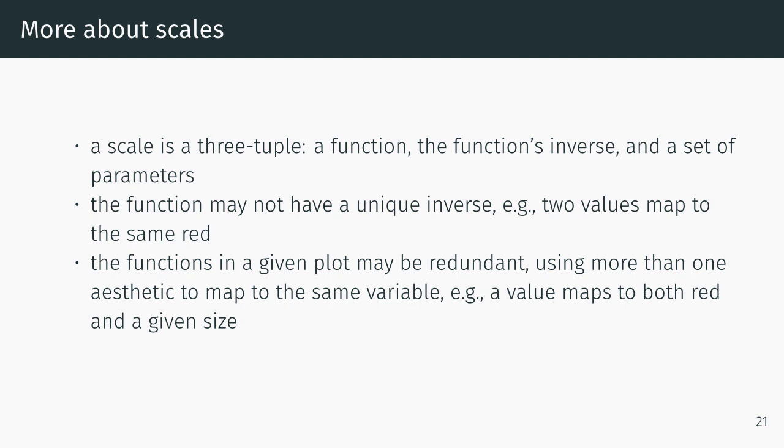A scale is a three-tuple: a function, the function's inverse, and a set of parameters. The function may not have a unique inverse. Two values may map to the same red. The functions in a given plot may be redundant, so using more than one aesthetic to map to the same variable.